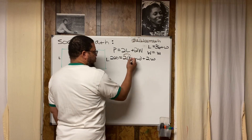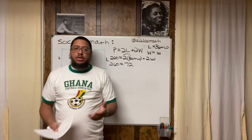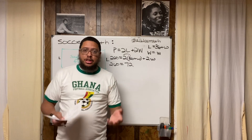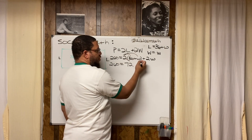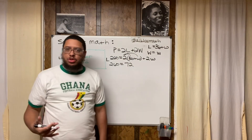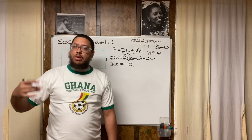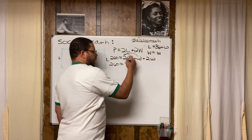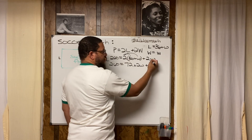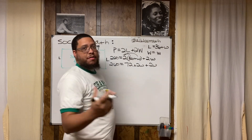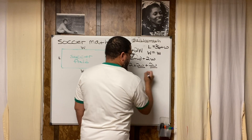Now we distribute. 260 equals 2 times 36 plus 2 times W plus 2W. Two times 36 is 72 — because 2 times 30 is 60, and 2 times 6 is 12, and 60 plus 12 is 72. Then 2 times W is 2W. We only multiply the 2 by everything inside the parentheses. We don't multiply it by the outside 2W. Now we combine like terms.